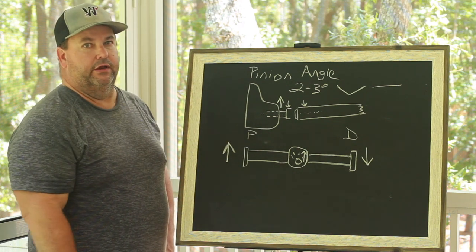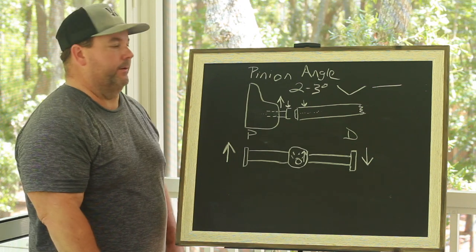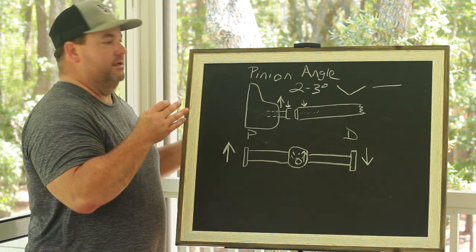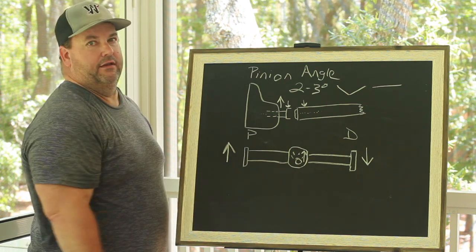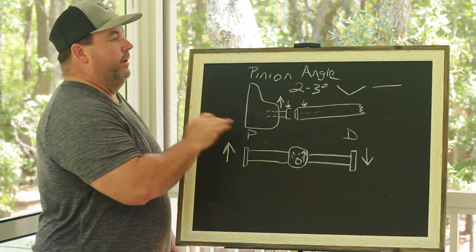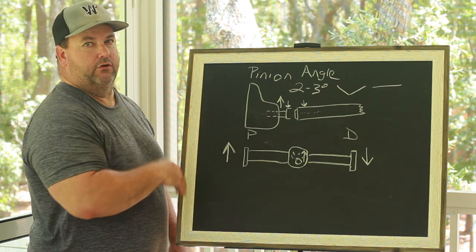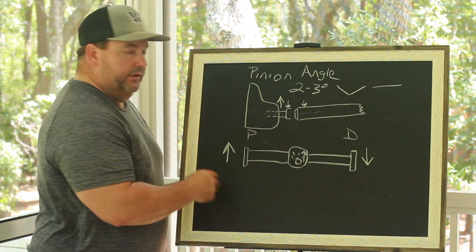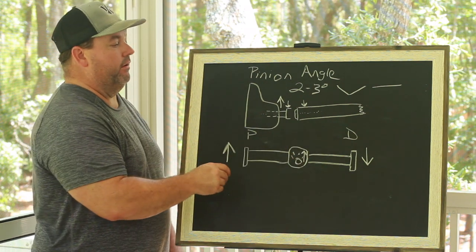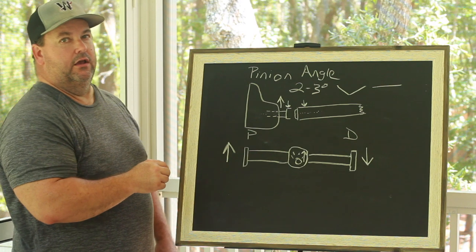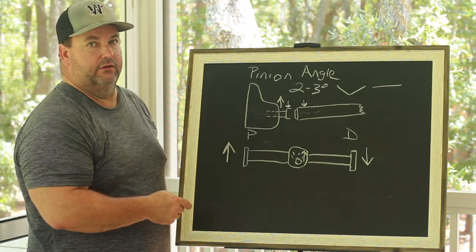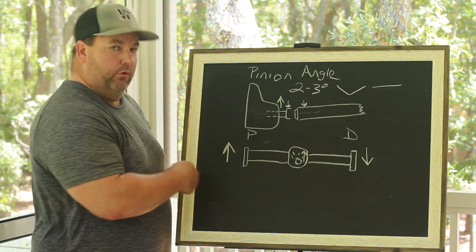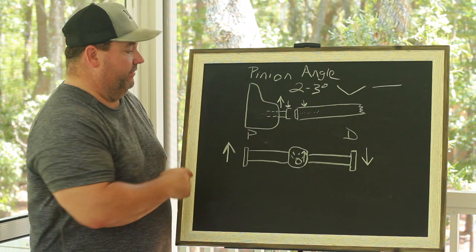Pinion angle is about u-joints, u-joint safety, the life of your u-joints, and not getting things in a bind. Do not worry about pinion angle for putting bite in your car. We've covered how to put bite in your car in other videos. Rear end twist, please be aware of what's happening with that rear end when it gets hit from sitting still to 6,000 RPMs in less than a second and what forces are at play with the natural tendency of that rear end.